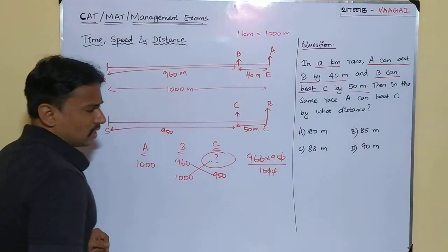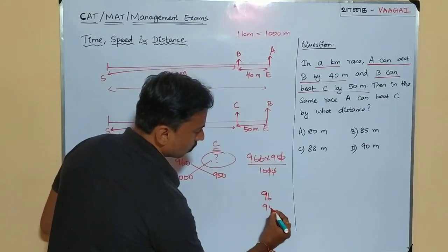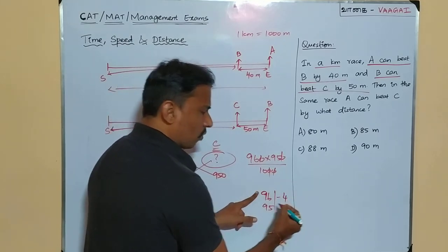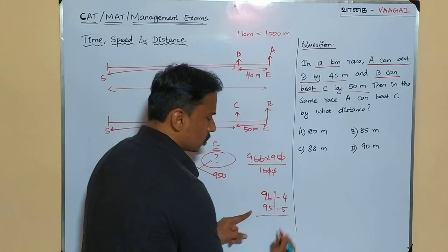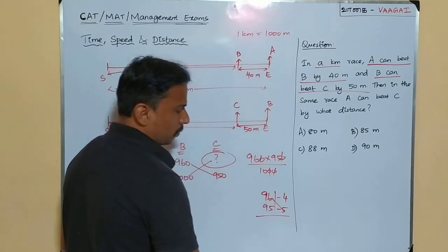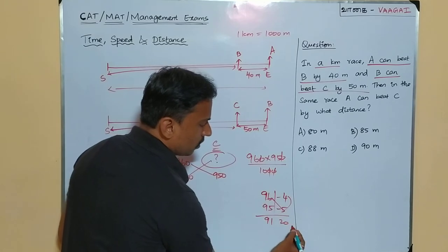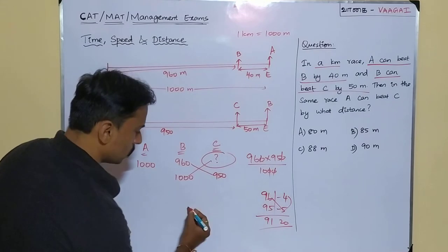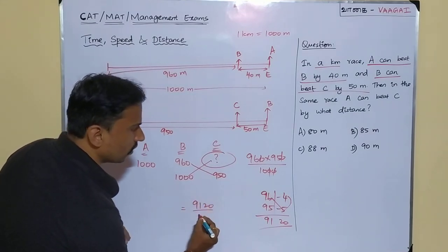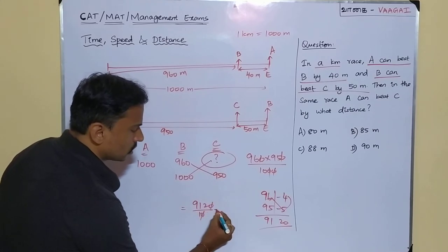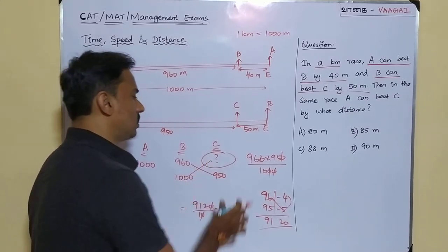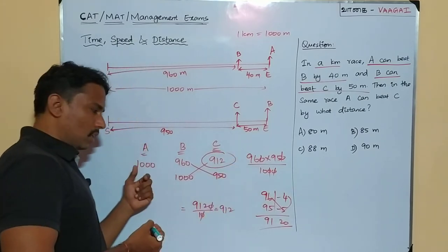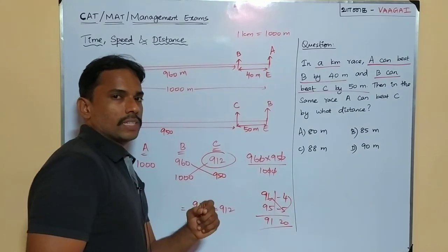We calculate 96 × 95 using base multiplication with respect to 100. 96 is 100 minus 4, and 95 is 100 minus 5. So 96 minus 5 = 91, and 4 × 5 = 20, giving 9120. Then 9120 divided by 10 equals 912. So when A is at 1000 meters, C is at 912 meters.